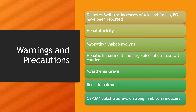Warnings and precautions for use with Simvastatin: starting with diabetes, patients using Simvastatin have reported increases in A1C as well as fasting blood glucose, so it's important to be aware of those. Additional warnings include hepatotoxicity, myopathy, and rhabdomyolysis. Use with caution in hepatic impairment and with large alcohol use, myasthenia gravis, and renal impairment. Simvastatin is also a CYP3A4 substrate, and it's important to avoid use with strong inhibitors and inducers of CYP3A4.